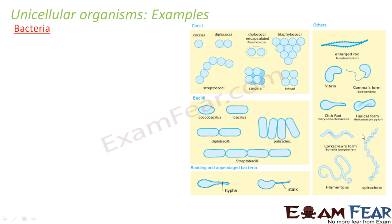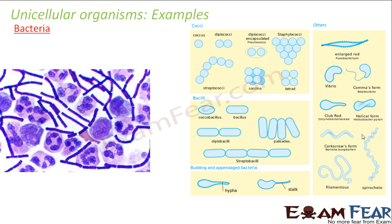The next unicellular organism is bacteria, a name quite common to us. Bacteria are microorganisms that come in a variety of shapes and sizes. Bacteria were one of the very first life forms on earth. They are generally found in soil, water, or acidic hot springs, and also live in plants and animals — for example, bacterial infection means bacteria is residing in that part of the body.